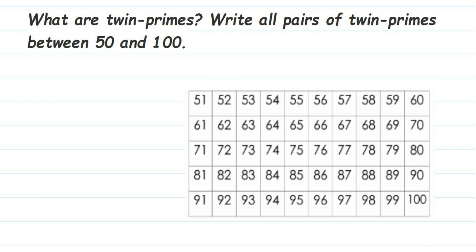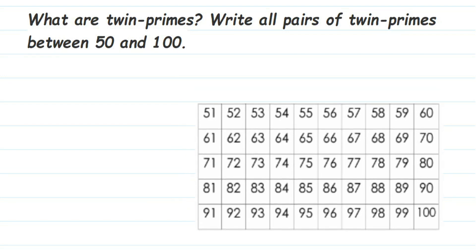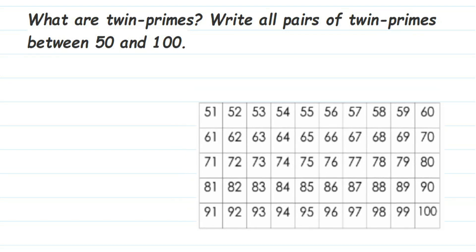Hey everyone, here is a question on prime numbers. The question is: what are twin primes, and what are all pairs of twin primes between 50 and 100? Twin primes are when there is exactly one composite number between two prime numbers.